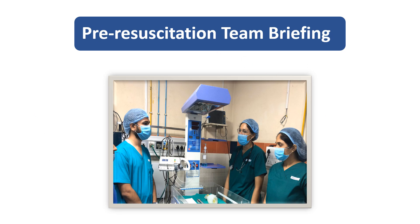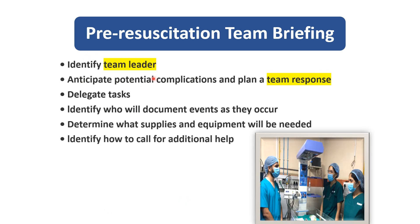Team briefing is the second pre-requisite before birth. In team briefing, we should identify the team leader, anticipate possible complications after birth, plan the team response, distribute tasks among team members, and identify who will document events such as Apgar score, timing of improvement signs, and up to what steps of resuscitation may be needed. Equipment and all sizes of masks and catheters should be checked, and it should be decided who will call for additional help if required.